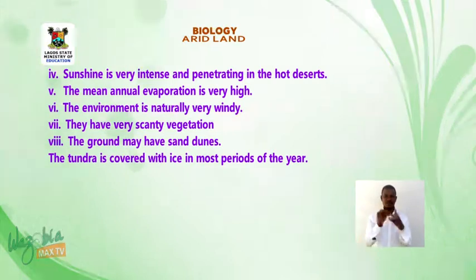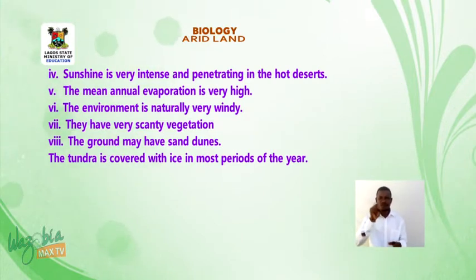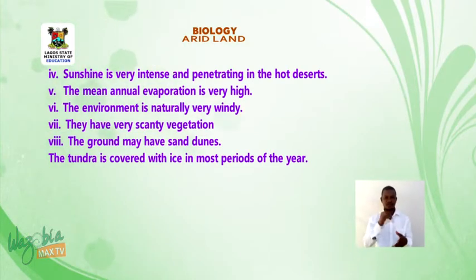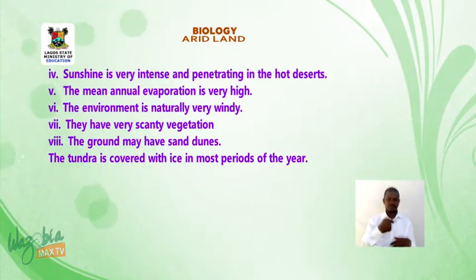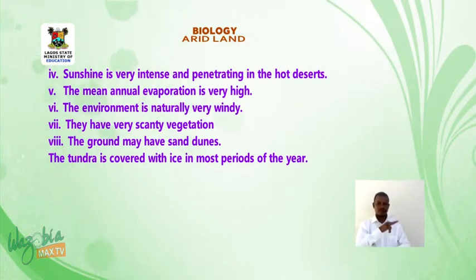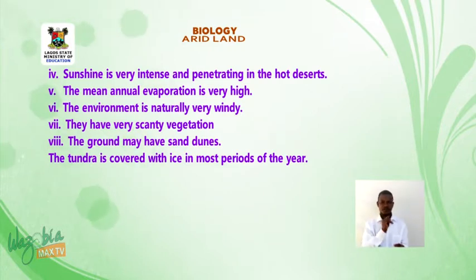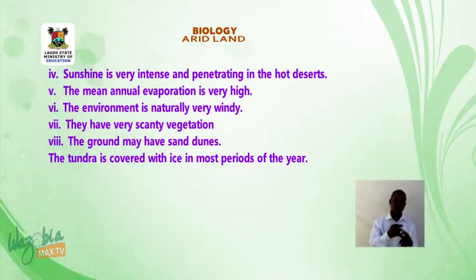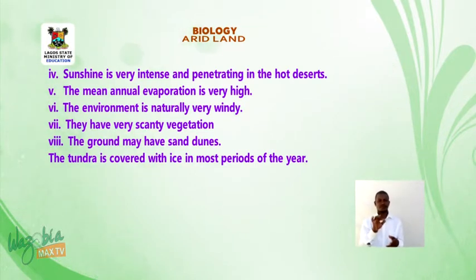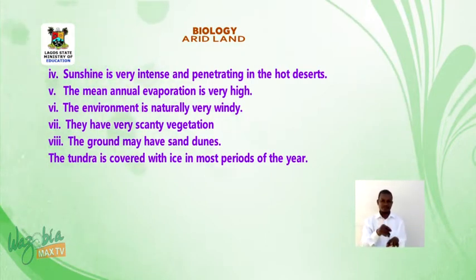Three, atmospheric humidity is very low. Four, sunshine is very intense and penetrating in the hot deserts. Five, the mean annual evaporation is very high. Six, the environment is naturally very windy because of the low water and scarce rainfall, which makes the environment windy.